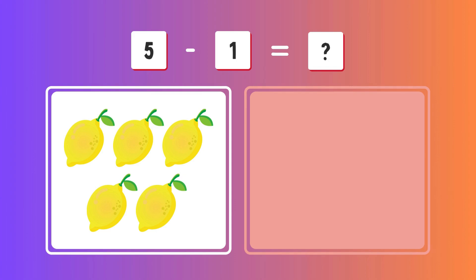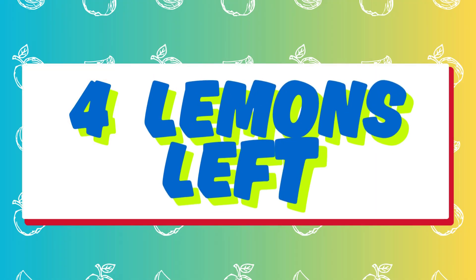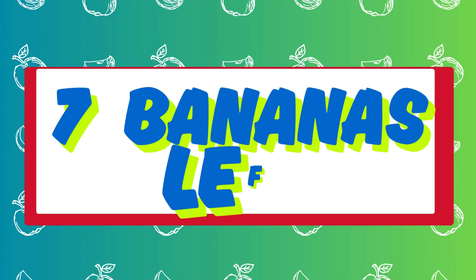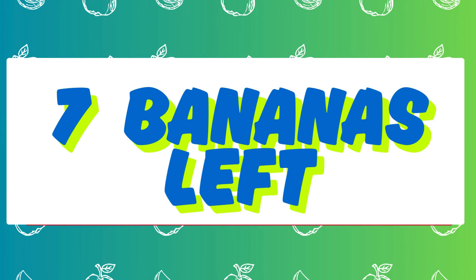Five, four, three, two, one. Four lemons left. Nine minus two equals? Five, four, three, two, one. Seven bananas left.